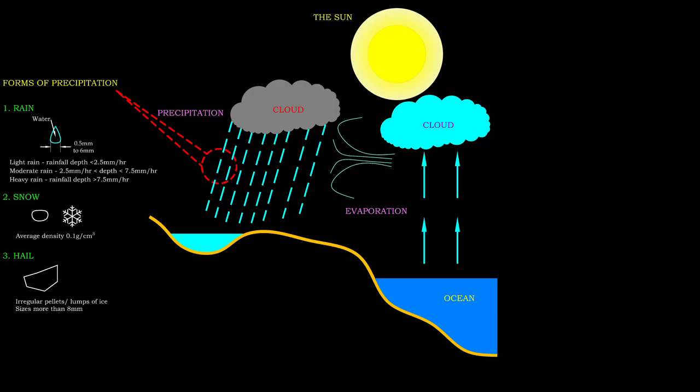Precipitation may also take the form of irregular pellets or lumps of ice. This kind of precipitation is known as hail, and the size is usually greater than 8 mm.